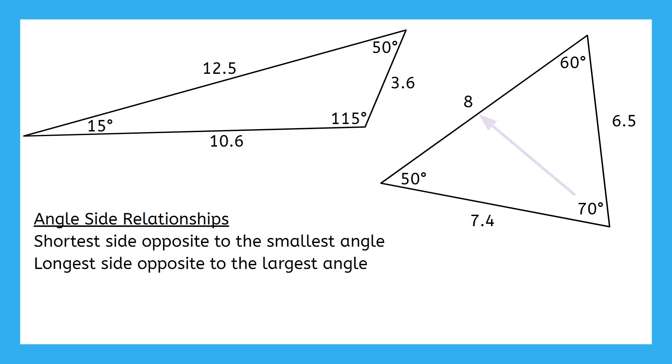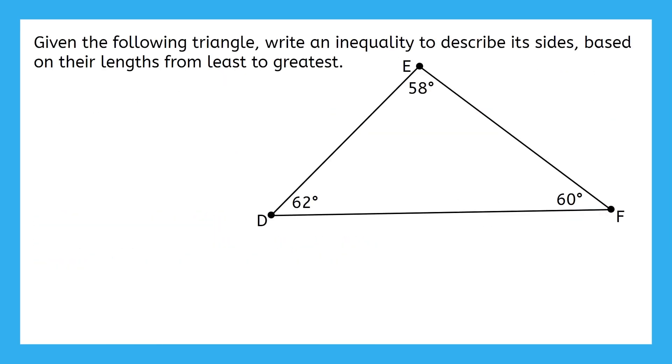We're going to do one example problem next, so pause the video here if you need any time to catch up in your notes template. This problem says to write an inequality to describe the sides of the triangle based on their lengths from least to greatest. Now remember that the triangles you see will not always be drawn to scale, so we need to make sure that we're applying the relationship that we just learned to solve this. What side do you think is the shortest side?